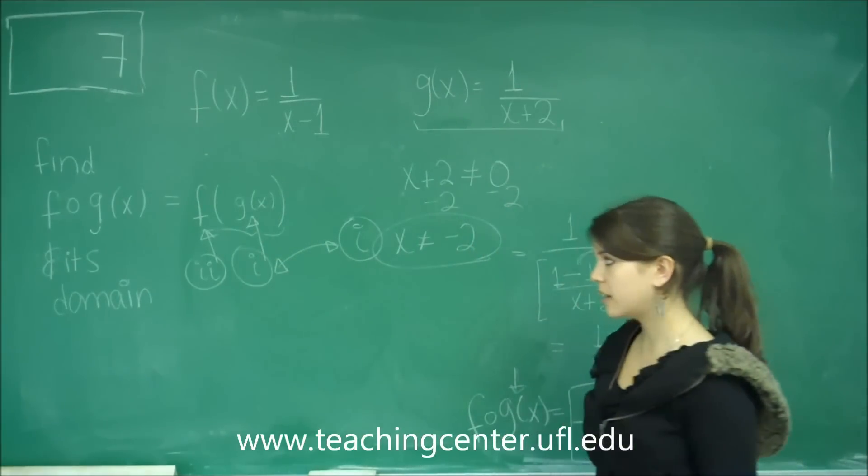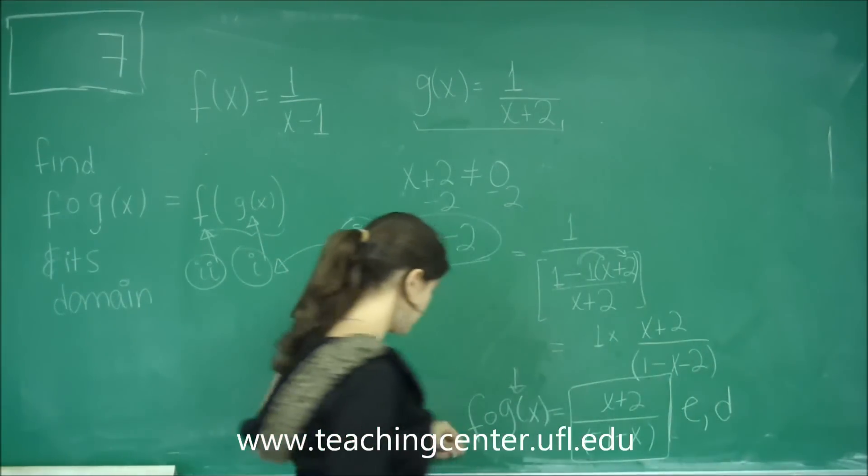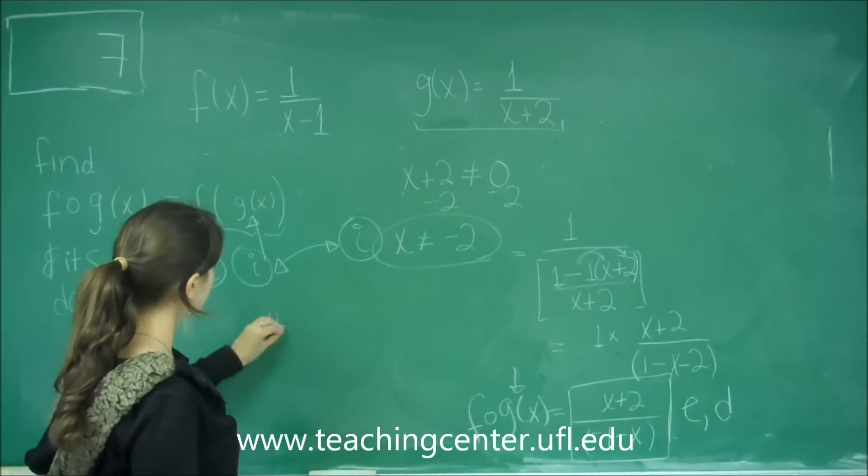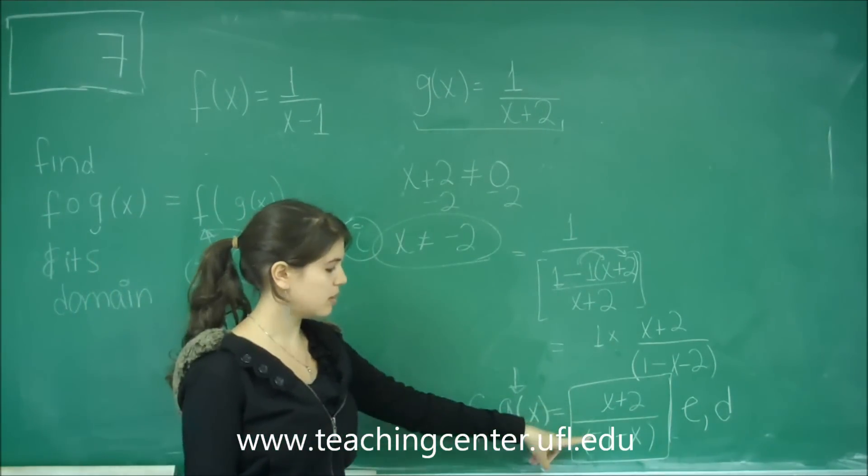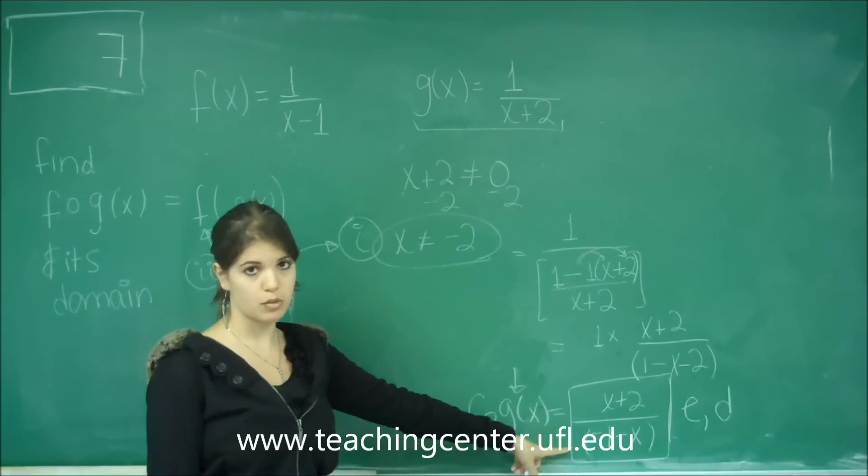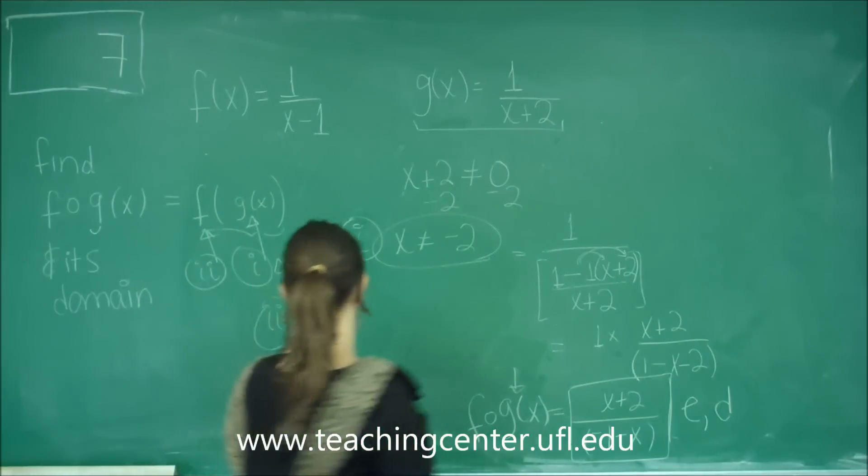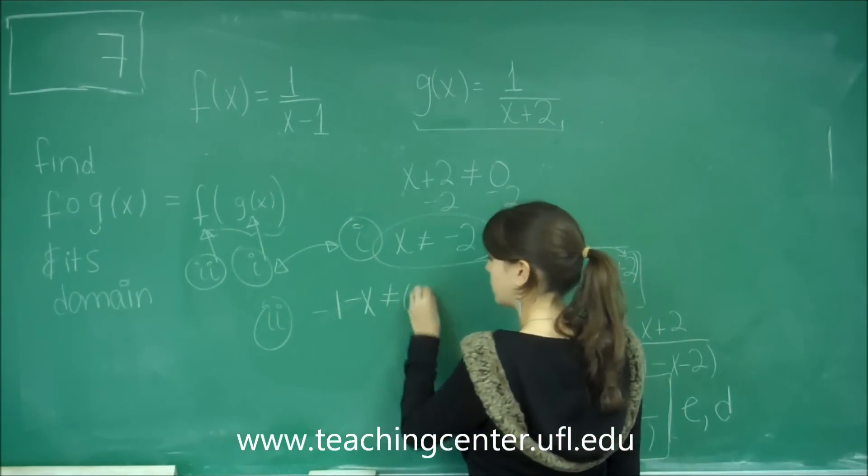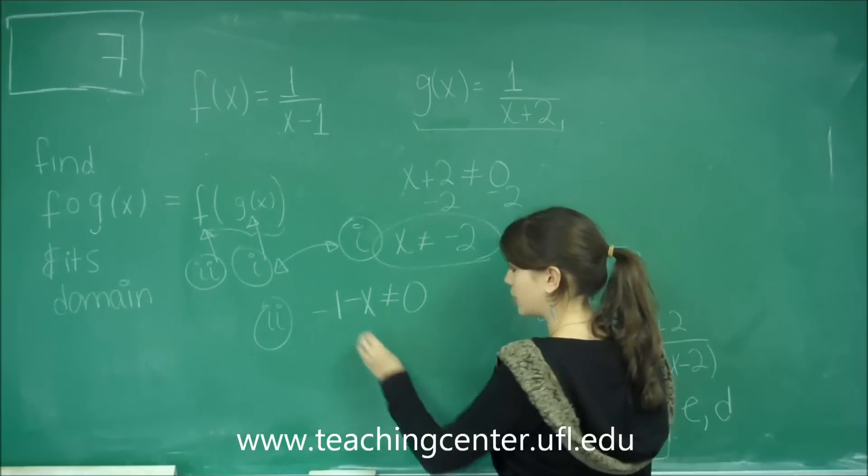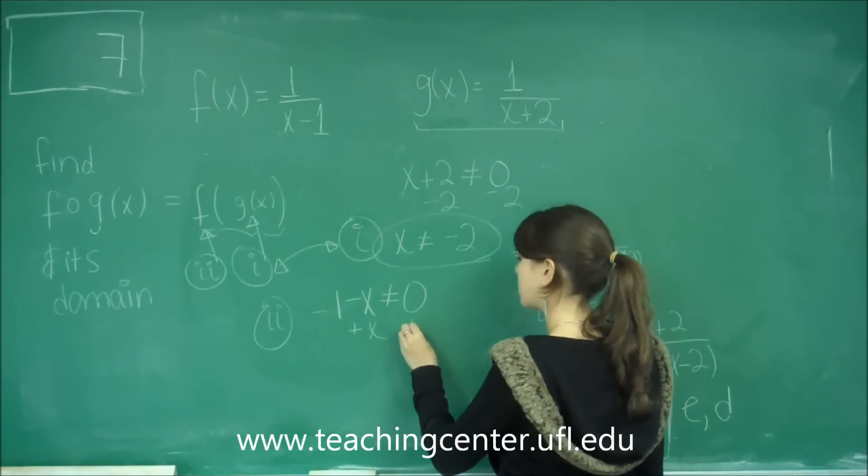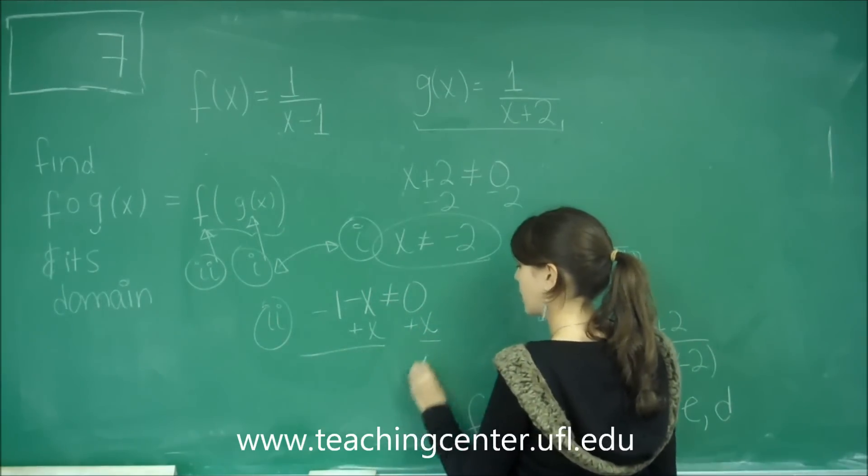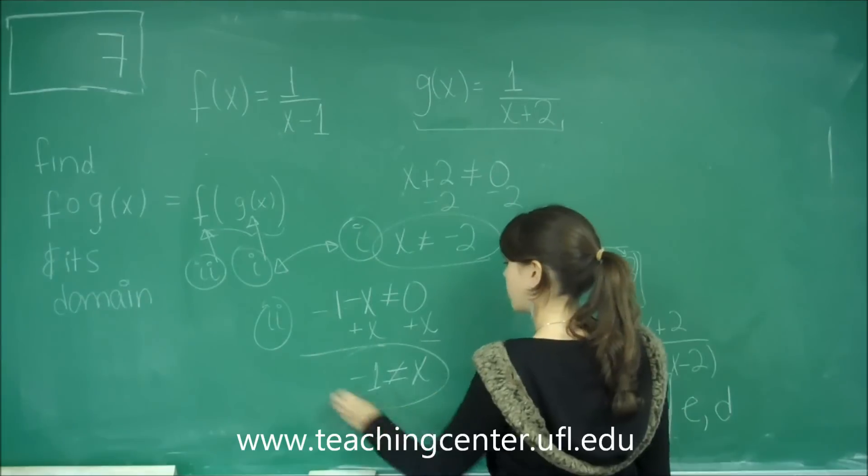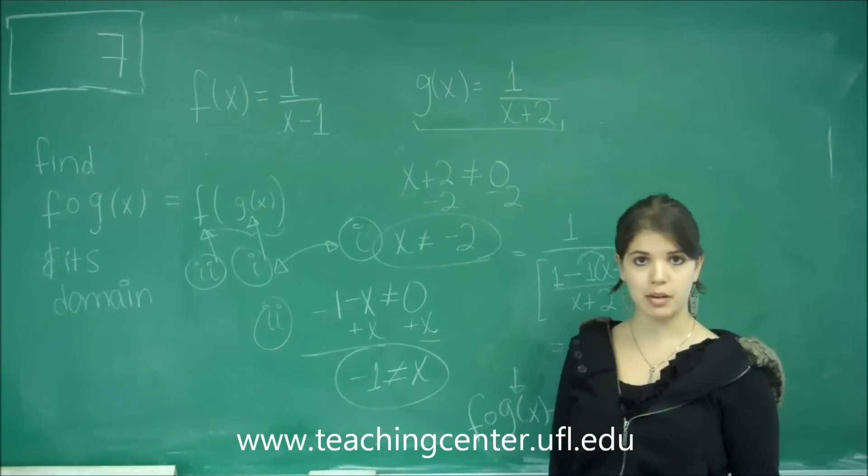Now the second part is the domain of this function over here. The domain of that would be when the denominator is equal to zero. So we have negative 1 minus x not equal to zero. Let's add x to both sides, and we get x is not equal to negative 1. That's the second part of the domain.